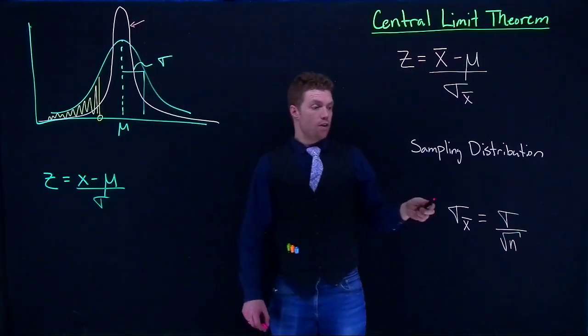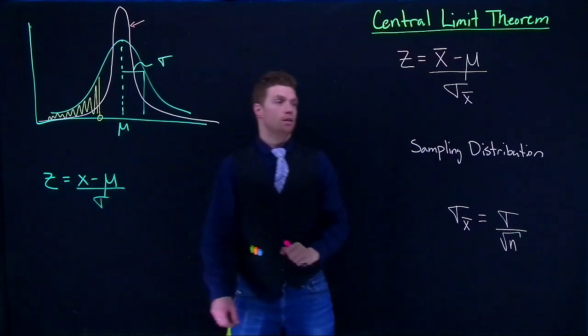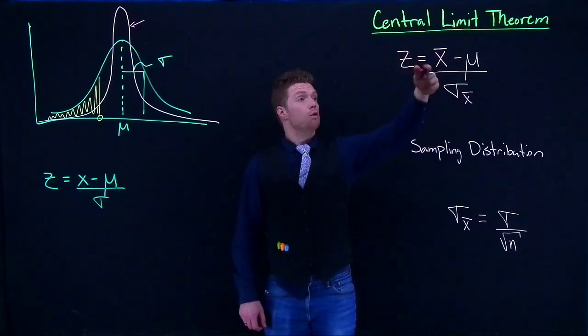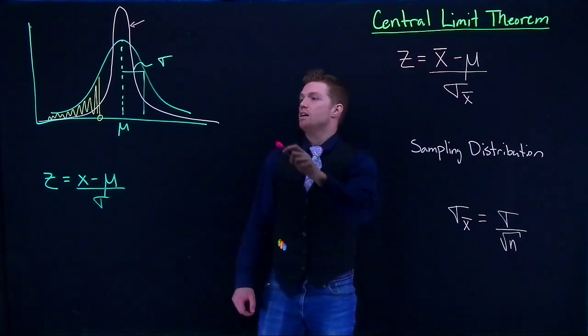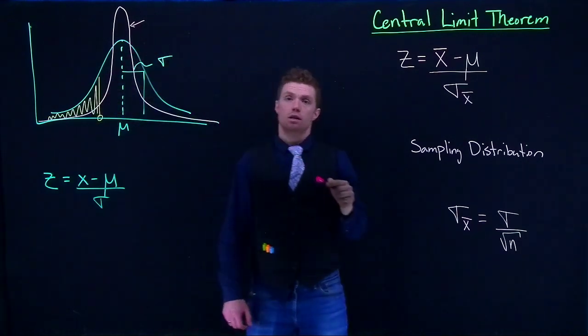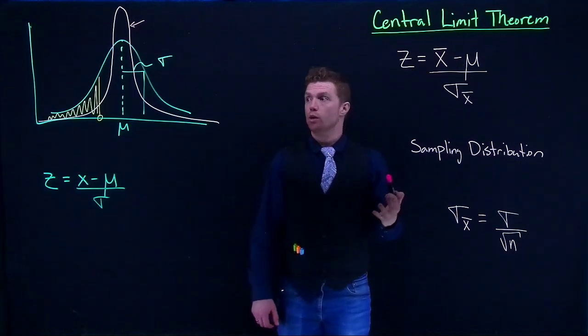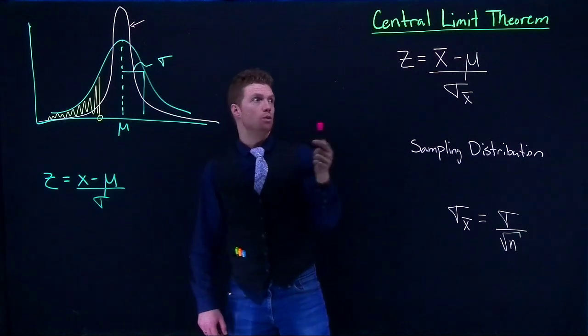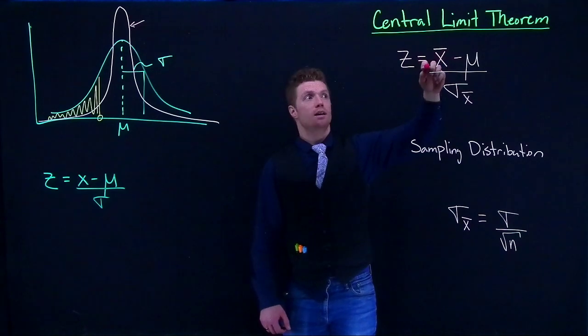And so it's very handy that we can now talk about, instead of just single measurements, now we can talk about the distribution of multiple measurements over and over and over again. And we know that the central limit theorem basically says, or one part of it says, that if our original distribution is normally distributed, the sampling distribution is also going to be normally distributed. What changes though is this equation. So instead of using x, we're using this point estimator of x bar.